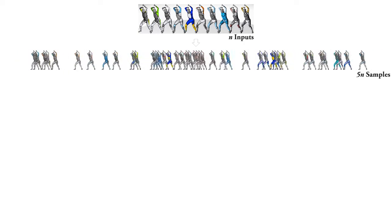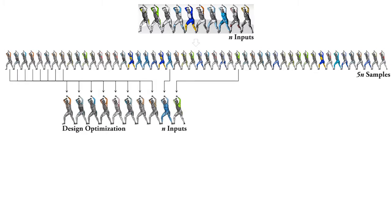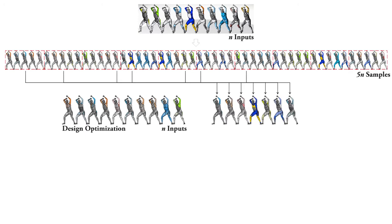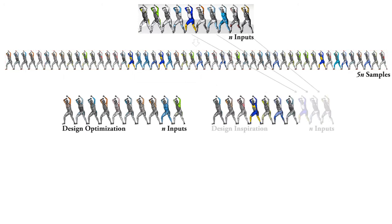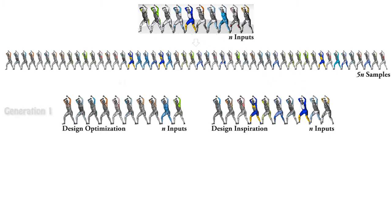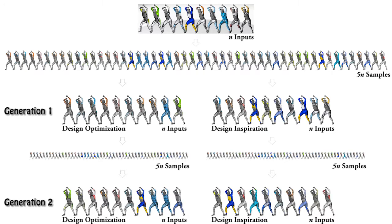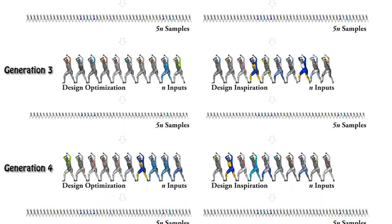The samples are sorted by fitness score. Good samples with high fitness score are selected for design optimization, but for design inspiration, samples are uniformly selected according to fitness score, and three of them are randomly selected from the original input designs. Here we get our first generation. The results of the first generation are used as new inputs to generate 50 random samples for the second generation. This process can be iterated to get more and more evolution results.